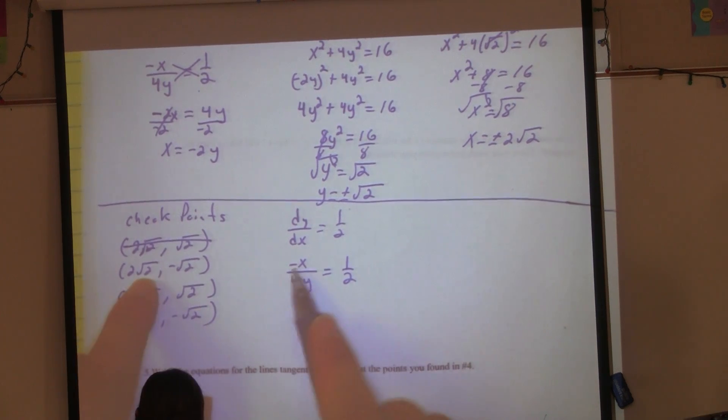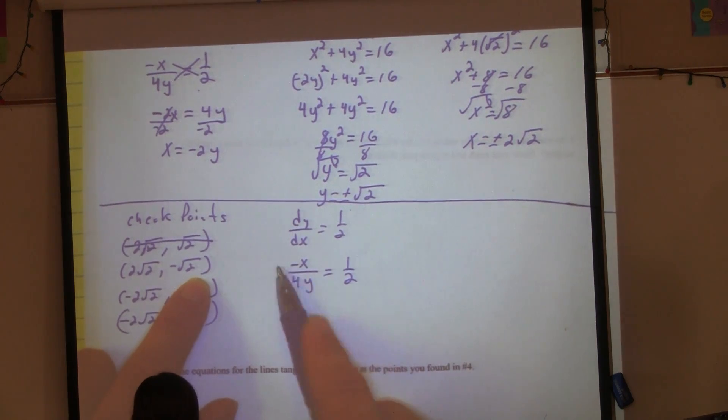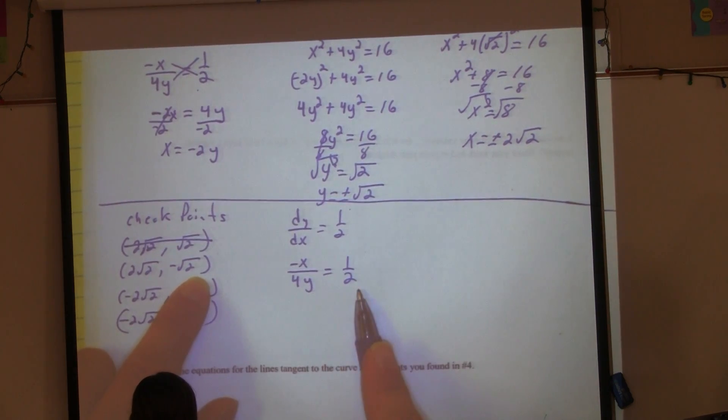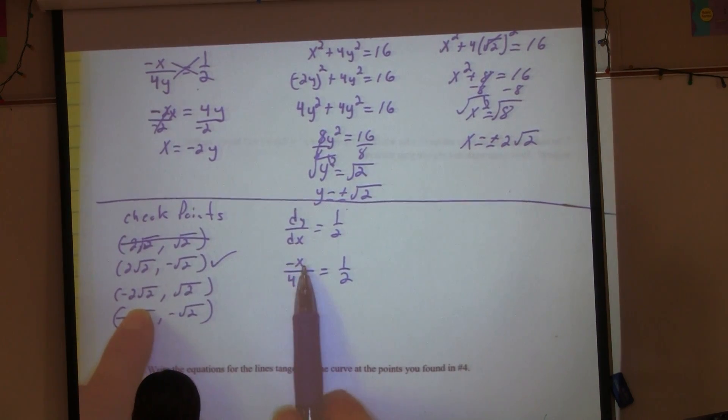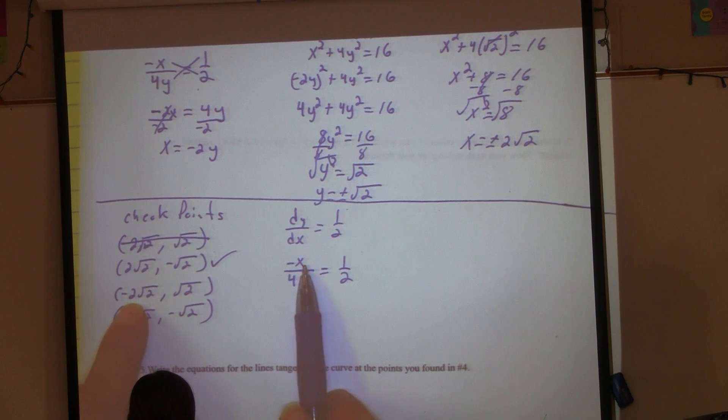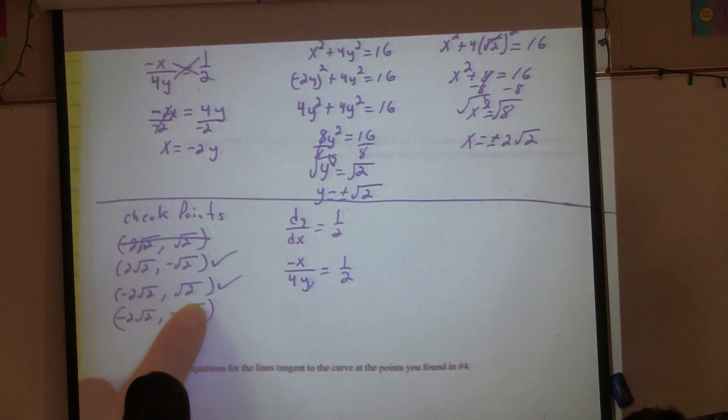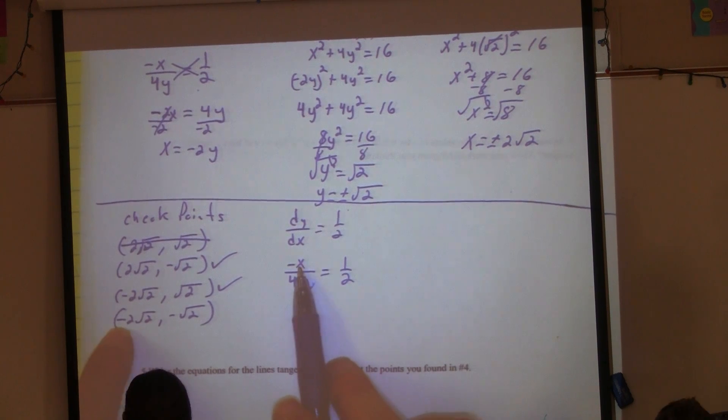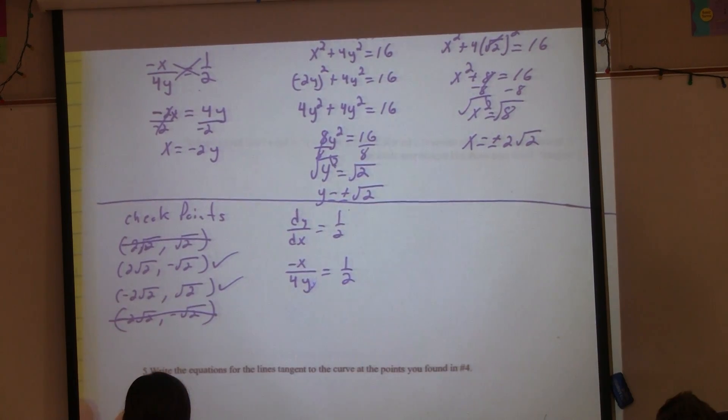If you end up with more than a couple of points, you need to check. We're going to check in here. dy/dx has to equal 1/2. So we're going to check that -X/(4Y) gives us that 1/2. Really, all you have to focus on is the sign. Let's check it out. If I put positive 2√2 there, that's going to make it negative. Then positive √2 down here, that's positive. Negative over positive is negative. So it doesn't equal that positive 1/2. So this guy's out.